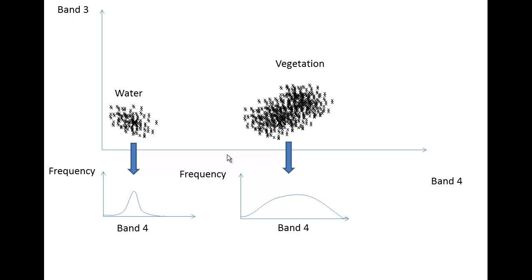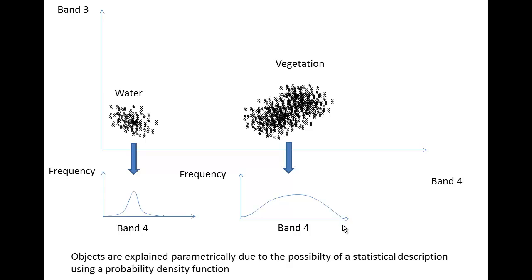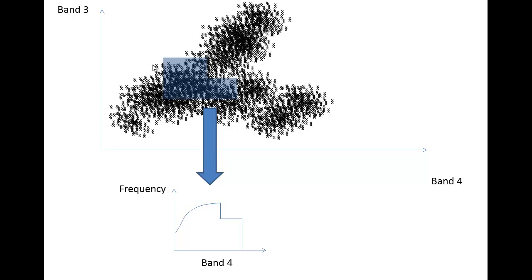We can use these ellipses to plot a frequency in band number four, and as you can see we have a nearly normal distribution — quite a wide normal distribution in band number four. We can describe these probability density functions with some statistics: we can say the mean value is here, and we have some standard deviation on them as well.